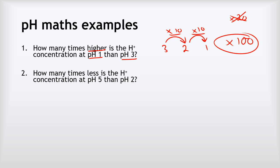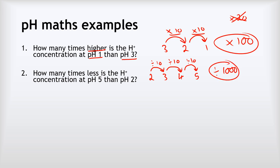Worked example two: how many times less is the hydrogen ion concentration at pH 5 compared to pH 2? Starting at pH 2 and going to pH 3, we divide by 10. Going to pH 4 we divide by 10 again — a total of 100. Going to pH 5 we divide by 10 once more — a total of 1,000. So the concentration is 1,000 times less at pH 5 than at pH 2. Again, we multiply the divisions — we do not add them.